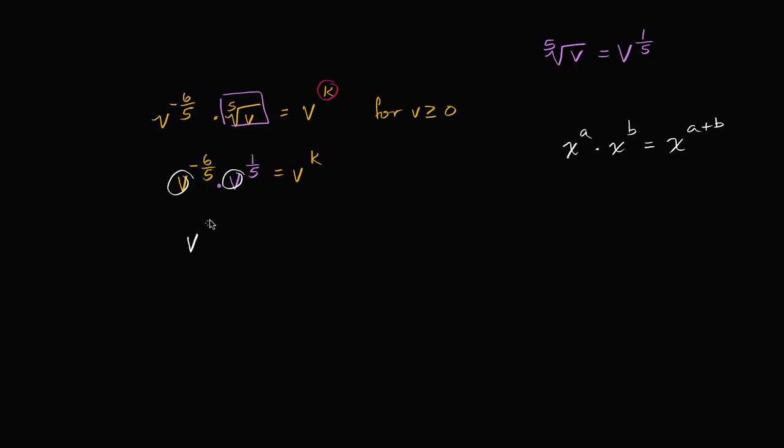v to the negative six fifths power plus 1 fifth power. Or v to the negative six fifths plus 1 fifth power is going to be equal to v to the k.